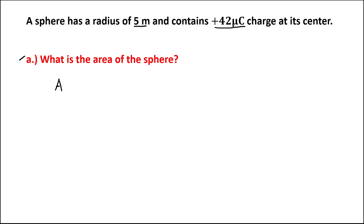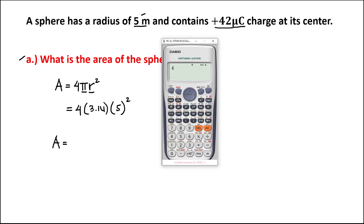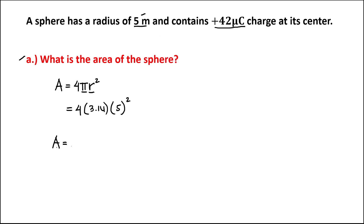To find the area of the sphere, this is equal to 4 times pi times r squared. So we have 4 times pi (3.14) times the radius squared, and the radius is 5 to the power 2. So the area equals 4 times 3.14 times 5 squared, which gives us 314 meters squared.